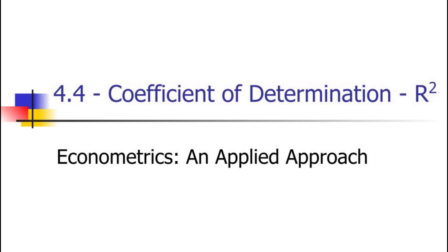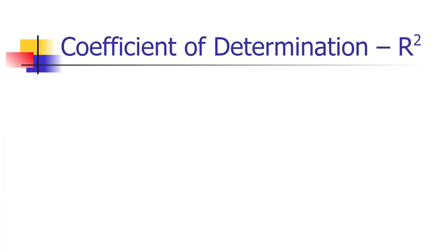One of the first things people often ask when they run a regression is how well does that equation fit the data. In this video, we're going to introduce the concept of the coefficient of determination, or R-squared, which is a measure of the proportion of the variation in the dependent variable that you can explain knowing the independent variable.